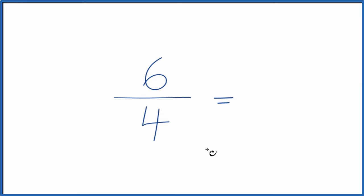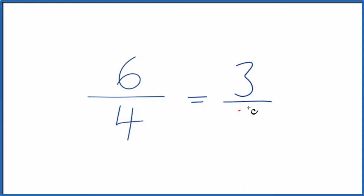So two is my greatest common factor here. Six divided by two, that's three. Four divided by two, that's two. So we could simplify or reduce six-fourths down to three halves.